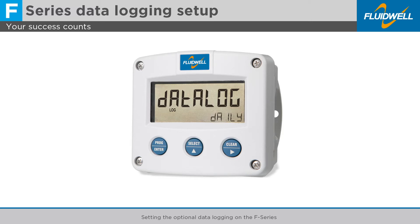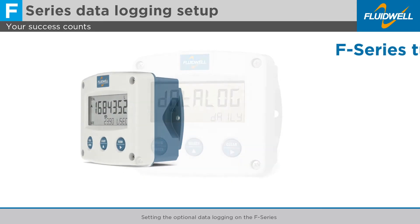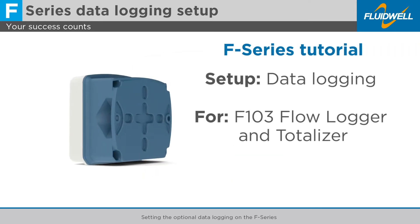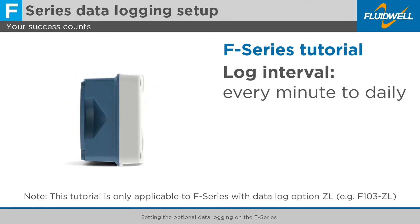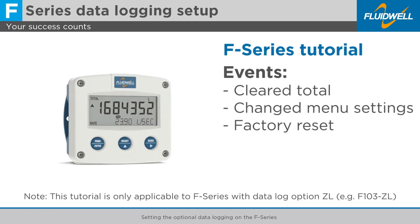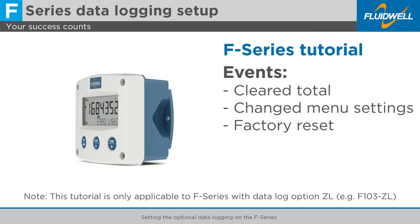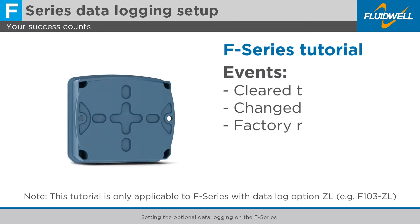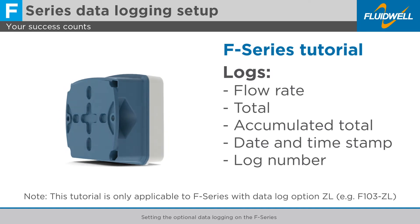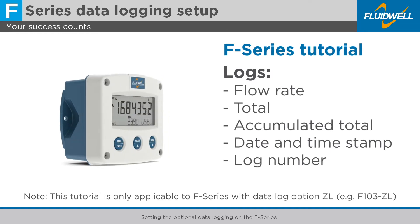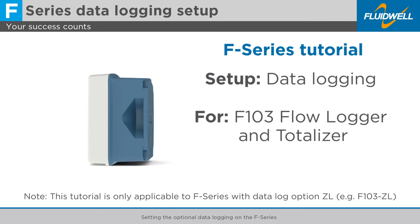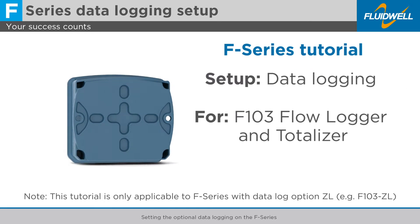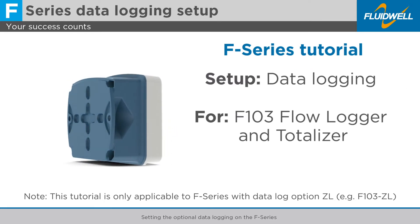When you need to easily monitor your flow measurements and historical data events over time, the logging feature on the F103 is the perfect tool for you. The log interval can be user-defined from every minute to daily. Events such as cleared total, changed menu settings, or factory reset can also be logged. Each log contains flow rate, total, accumulated total, date and timestamp, and log number. In this tutorial, we will show you how to set the optional data logging on the F103 flow logger and totalizer.